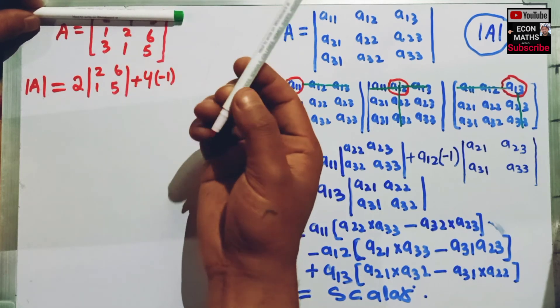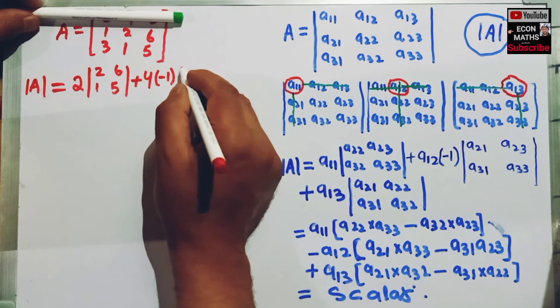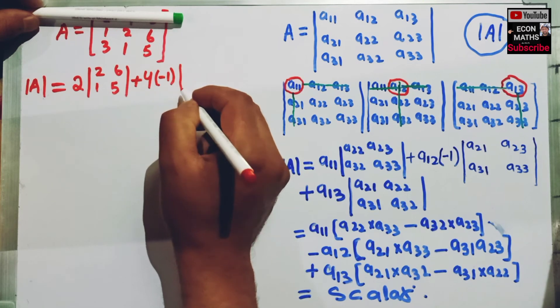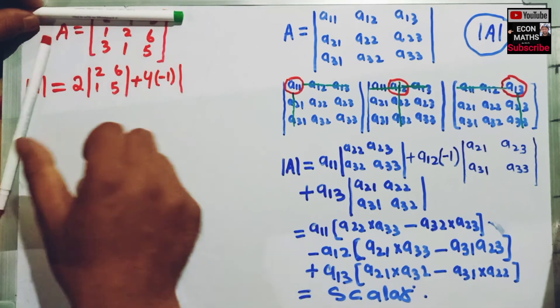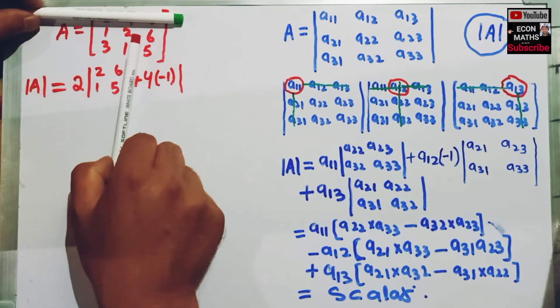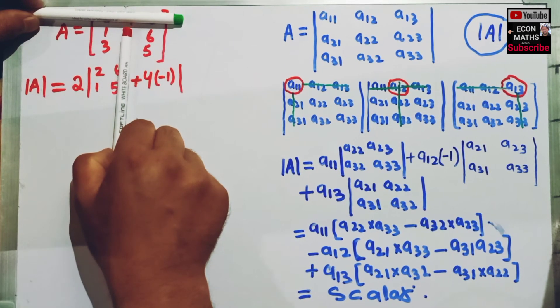We multiply this by the determinant of the remaining elements. The remaining elements are 1, 3, 6, 5.